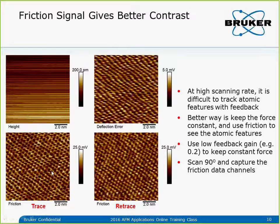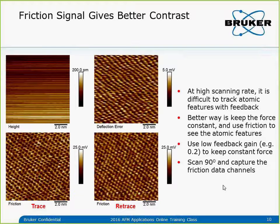The friction signal at 90 degrees shows much better contrast than the deflection error. This is the trace and retrace of the friction signal — you can see the contrast is reversed between trace and retrace, but the contrast is much better than deflection error. The key point is to use low gain just to track sample slope and Z drift, scan at 90 degrees, and look at the friction signal to see those atomic lattice features in contact mode.